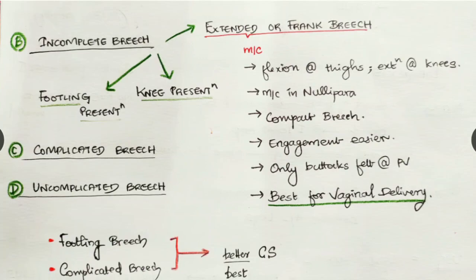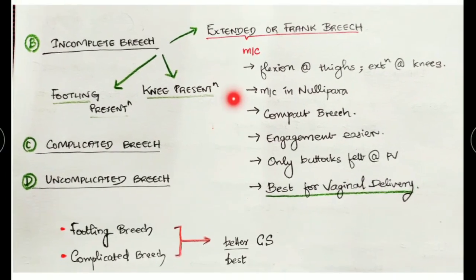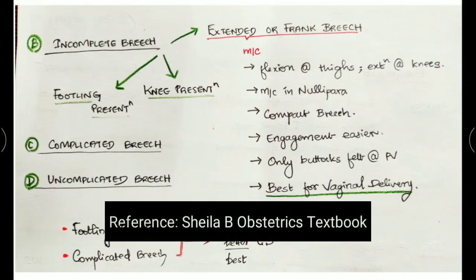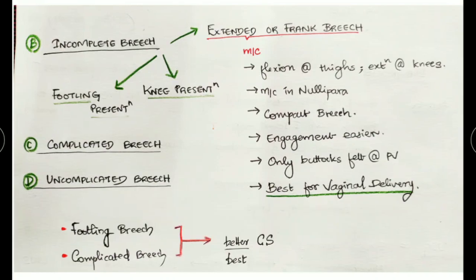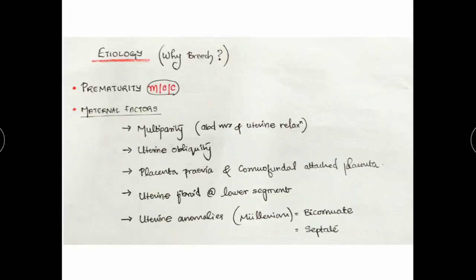Other presentations in incomplete breech include footling presentation and knee presentation. In complicated breech, there are associated maternal or fetal complications; in uncomplicated breech, there are none. Overall, the best type for vaginal delivery is extended or frank breech. If it is a complicated breech or footling presentation, it is better to go for caesarean section.